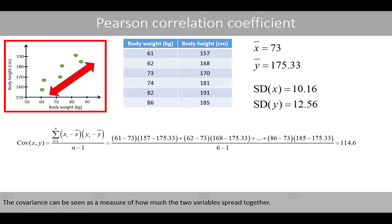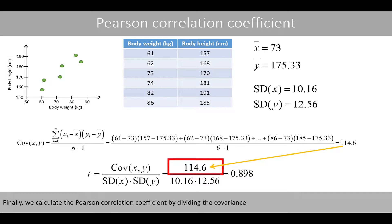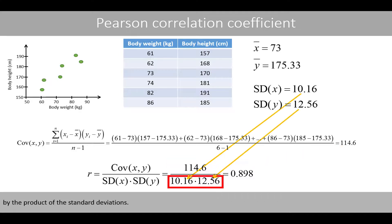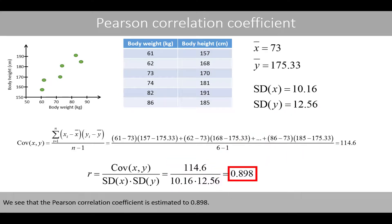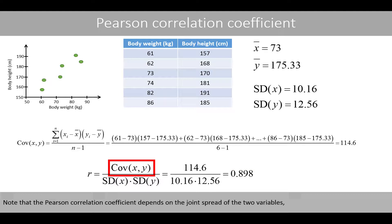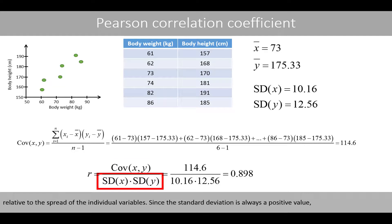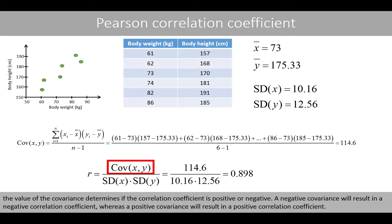The covariance can be seen as a measure of how much the two variables spread together. Finally, we calculate the Pearson correlation coefficient by dividing the covariance by the product of the standard deviations. The Pearson correlation coefficient is estimated to 0.898. Note that it depends on the joint spread of the two variables relative to the spread of the individual variables. The value of the covariance determines if the correlation coefficient is positive or negative: a negative covariance results in a negative coefficient, whereas a positive covariance results in a positive coefficient.